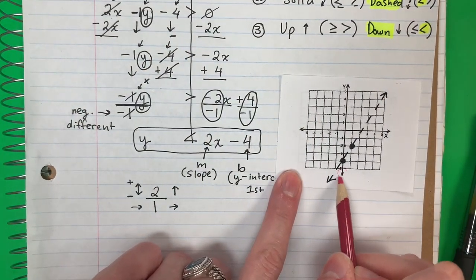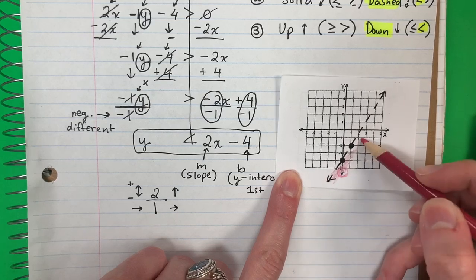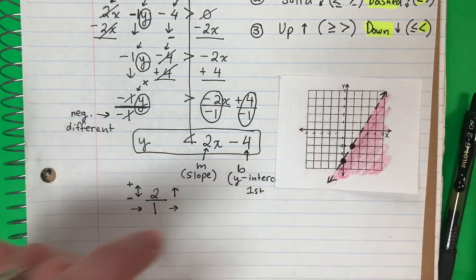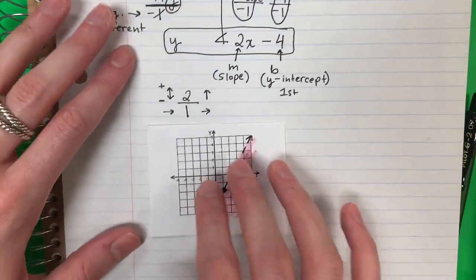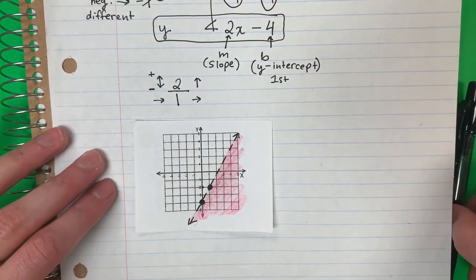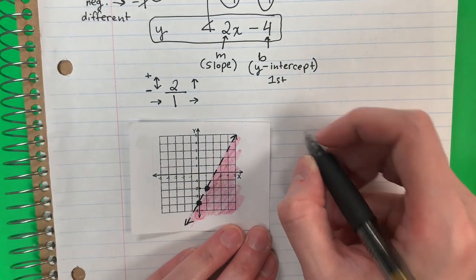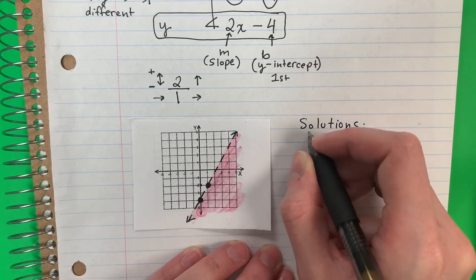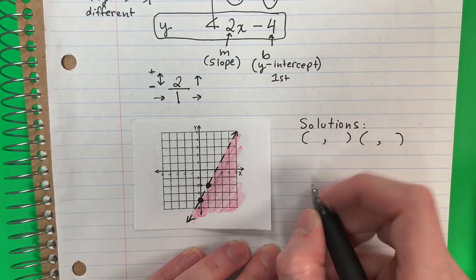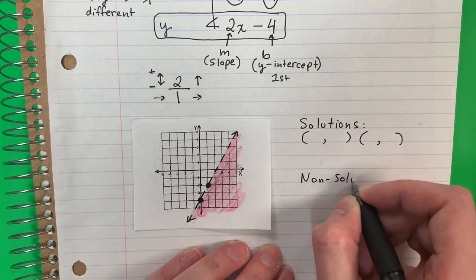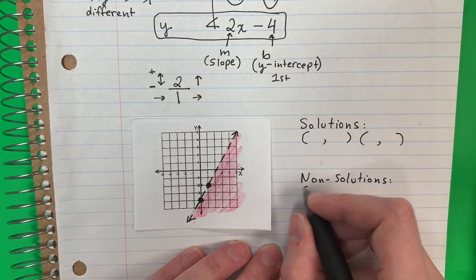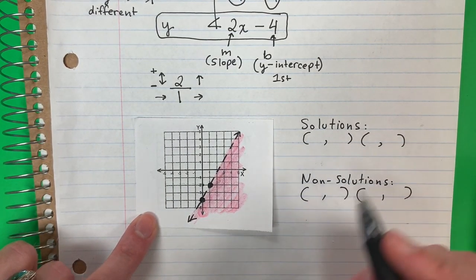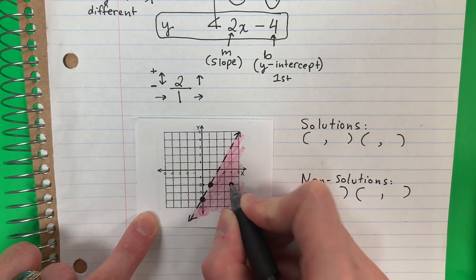And I'm going to go ahead and color this side. There we go. Now let's do the solutions and non-solutions. Ahora vamos a hacer los soluciones y non-solutions. So solutions. Non-solutions. Solutions are with color. Soluciones son con color. So here's a good one. Here's a point in the color. Aquí hay un punto en el color.